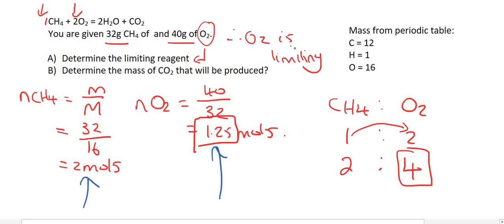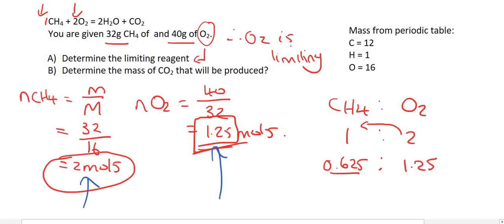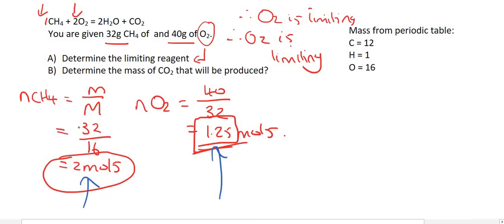Let's verify the other way: using all 1.25 moles of O₂ and dividing by 2 gives 0.625 moles of CH₄ needed. We have 2 moles — more than enough. So CH₄ is in excess and oxygen is limiting either way. For the rest of the question, use only the limiting reagent — oxygen. Do not use the excess one.